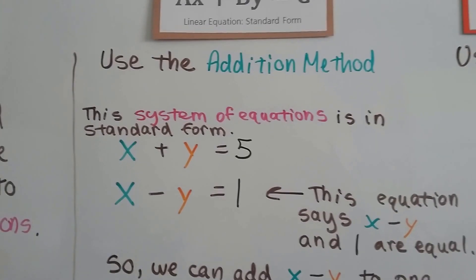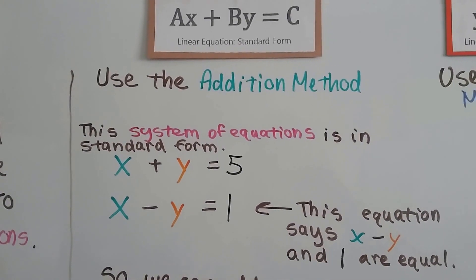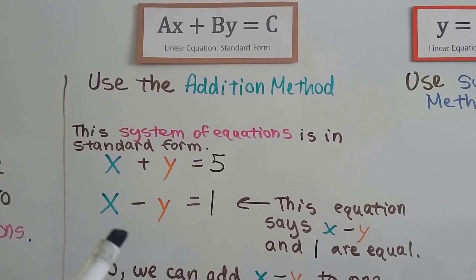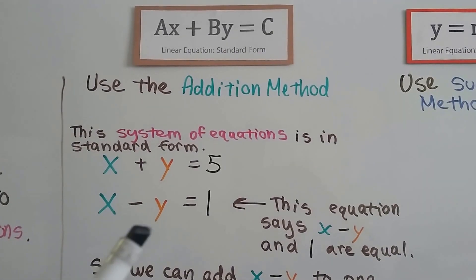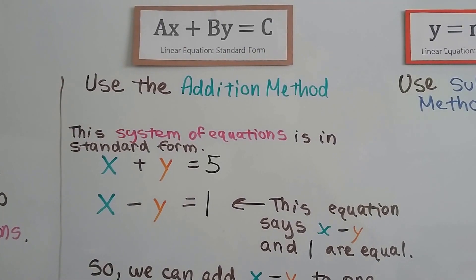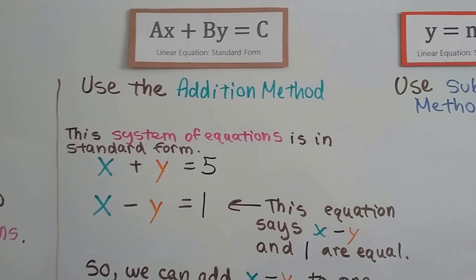We've got x + y = 5 and x - y = 1. This is standard form. We've got the x, and then the y, and then the c, the constant.